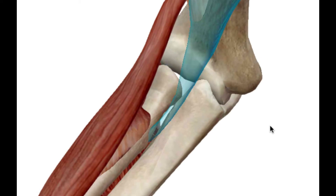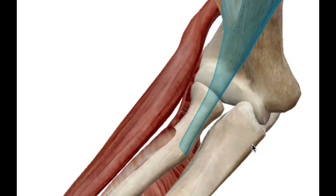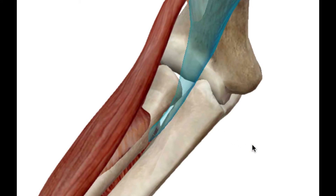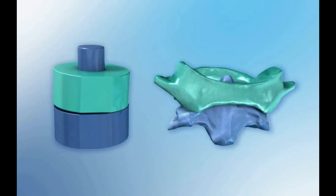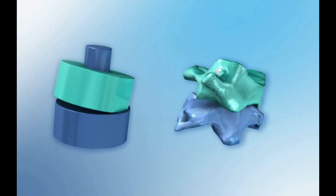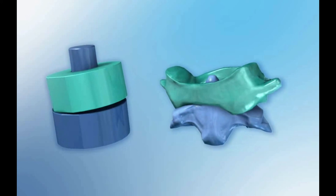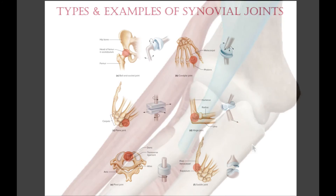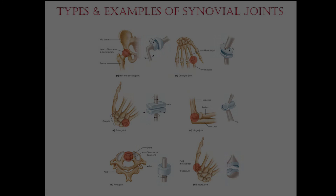Notice the head of the radius turning on the capitulum and the radial notch of the ulna — that's the pivot joint. Another great example of the pivot joint is your atlas and axis, and how they come together with the dens process, with the transverse ligament going around the dens — that allows the neck to rotate, the 'no' motion. That covers all six types of synovial joints: ball and socket, condylar, plane, saddle, hinge, and pivot. Thanks for watching and good luck in your studies.